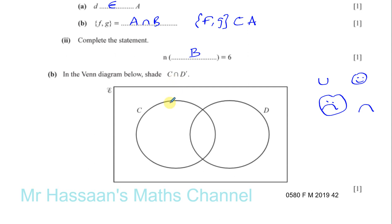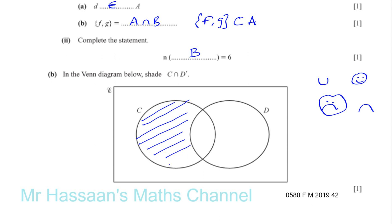Whatever is included has to be in the set C — it cannot be outside of set C. But it must also be outside of set D. The place which is outside of set D but inside of set C is this area here. This area is inside C for sure, and it's not in D. It has to be outside of D but inside C.